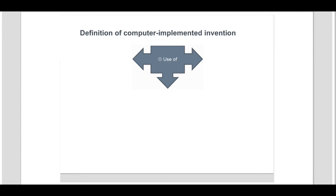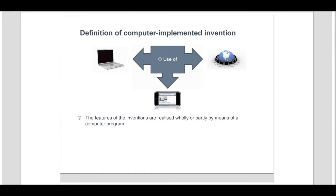In other words, an invention whose implementation involves the use of a computer, computer network or other programmable apparatus, the invention having one or more features which are realized wholly or partly by means of a computer program, is termed a computer-implemented invention. Here are some examples of computer-implemented inventions: a program-controlled, fault-tolerant scheme, washing machine cycle, car braking system.